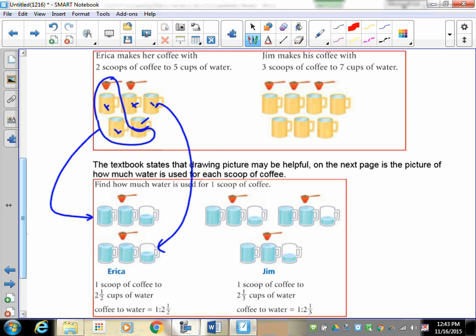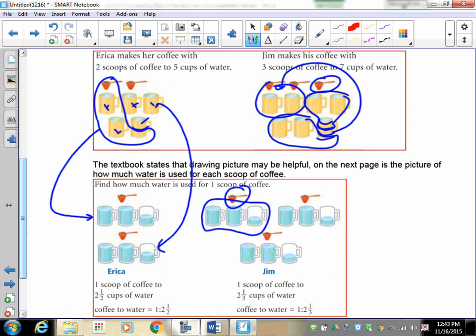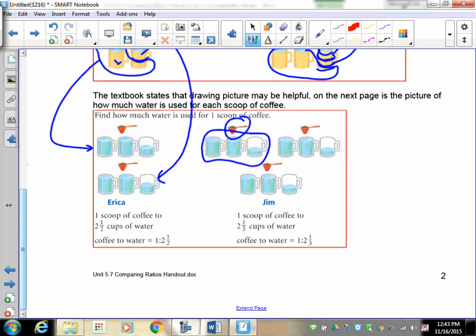Now take a look at Jim's. Jim's is the same type of thing but if you have one of these it has to be divided into thirds. So what happens here is we have two and there's a third there, we have another two and this third here, and then the middle third goes with these two right here. So the ratio is one scoop for every two and a third cups. So now what you have to do is decide which has more coffee to water. This one has more water than this one does, so that means this one here is basically the stronger coffee.